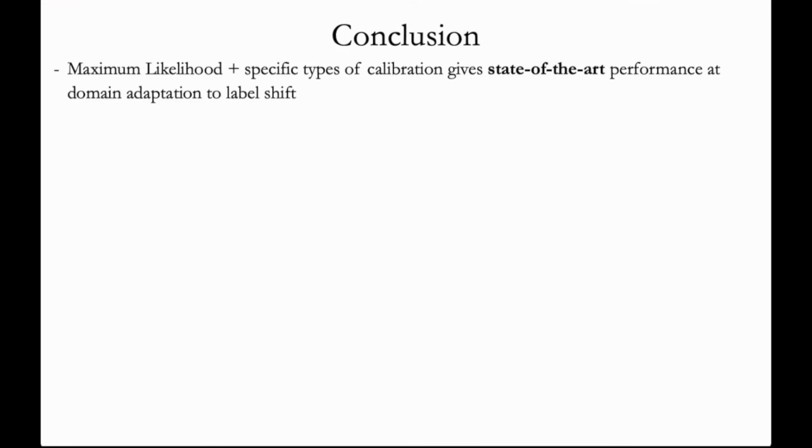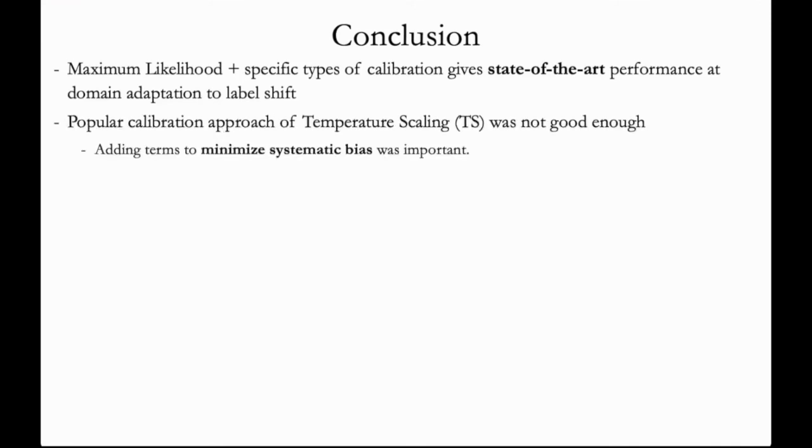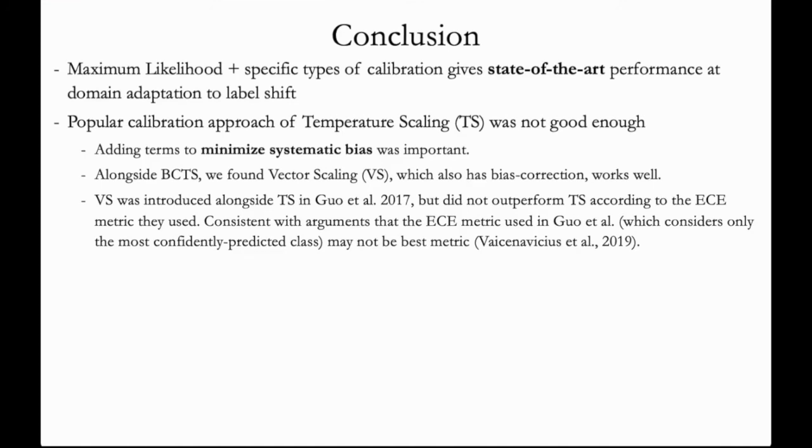So in conclusion, we find that max likelihood combined with bias-corrected forms of calibration gives state-of-the-art performance at domain adaptation to label shift. We found that the popular calibration approach of temperature scaling wasn't good enough, and that adding terms to minimize systematic bias was important. Along with BCTS, we also found that vector scaling, which is another extension of temperature scaling that contains bias correction terms, achieved good performance.